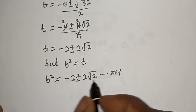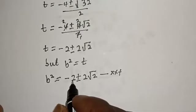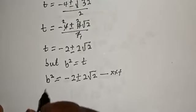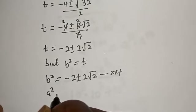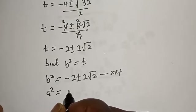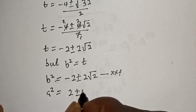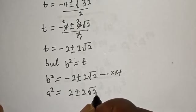Now we have the value of b squared, which is minus 2 plus or minus 2 root 2, and a squared, which is equal to 2 plus or minus 2 root 2.